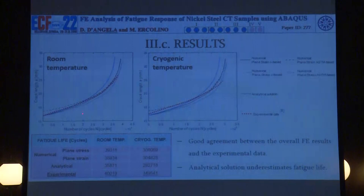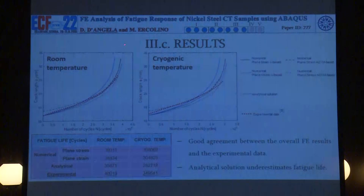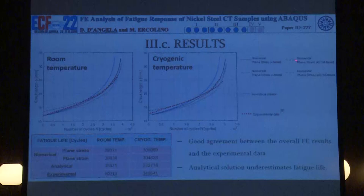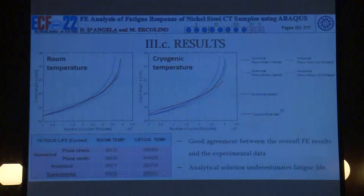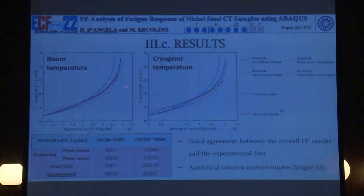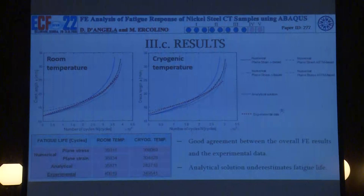Looking at the results, on the left you can see the room temperature case and on the right the cryogenic case. In both graphs, the red dashed line is related to experimental data by Kim et al., the blue dashed line to the analytical solution estimation, and both the black and gray lines — solid and dashed — are related to numerical models. The black lines are plane strain conditions and the gray ones plane stress; solid is phi-based and dashed is ASTM-based. There is very good agreement, particularly for room temperature cases, between the numerical simulations and the experimental data. The analytical estimation underestimated the fatigue life. The table shows the fatigue life values, further stressing the good quality of the numerical simulation.